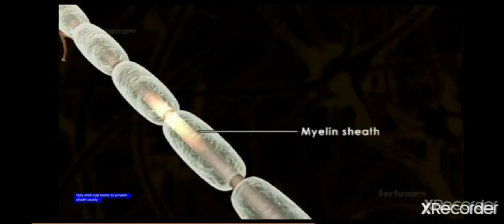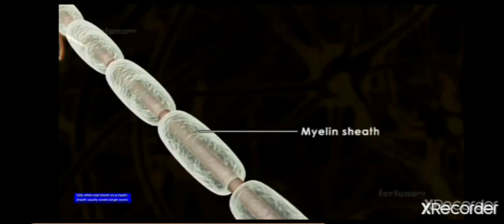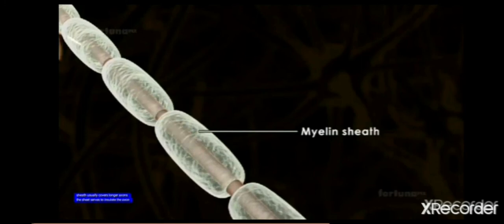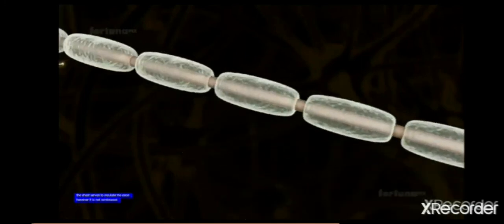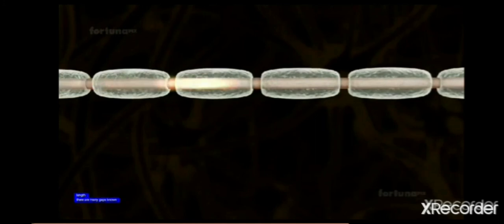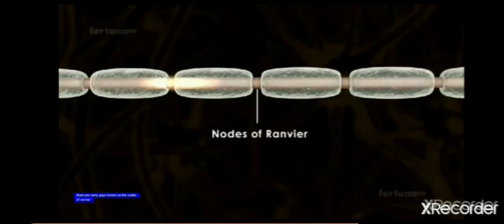They are covered with myelin sheaths. There are gaps in the myelin sheaths, and these are known as nodes of Ranvier.